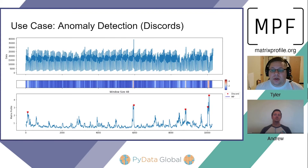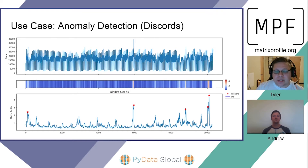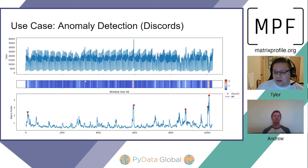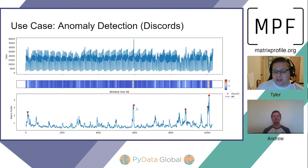Moving on to another common use case: anomaly detection. These are known as discords in Matrix Profile terminology. This data set is the New York City taxi data set, where passenger counts are summed on a 30-minute interval. You can see that the red stars denote the discords. Recalling that Euclidean distance near zero means similarity while larger values mean dissimilarity, you can definitely see that visually in the Matrix Profile plot below.